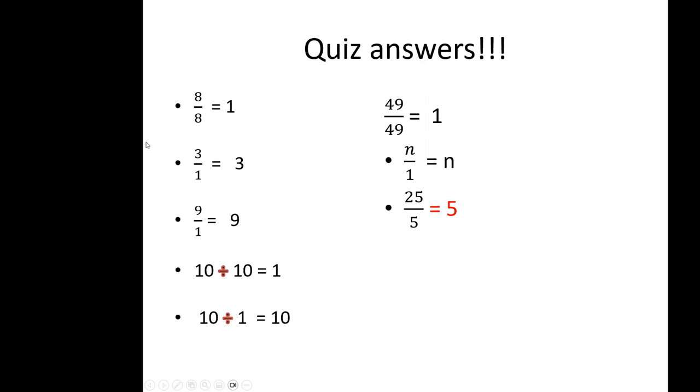Anything divided by itself is one. Anything divided by one is itself. And twenty-five divided by five is five because five times five is twenty-five.